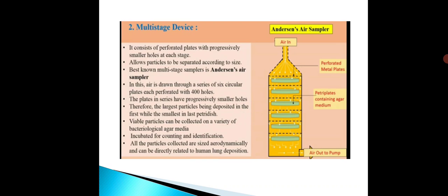The second type is the multi-stage device. The sampler used here is Anderson's air sampler. This device consists of perforated plates with progressively smaller holes at each stage, which allows particles to be separated according to size. In Anderson's air sampler, air is drawn through a series of six circular plates, each perforated with 400 holes. The plates in the series have progressively smaller holes, so the largest particles are deposited on the first plate while the smallest are deposited on the last petri plate.